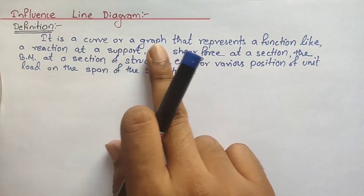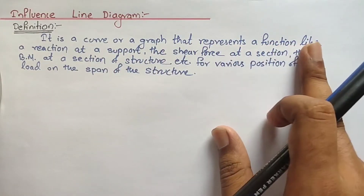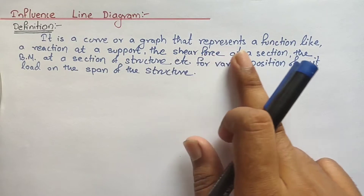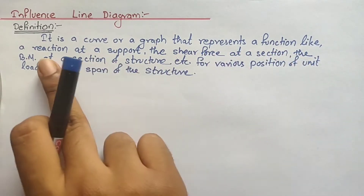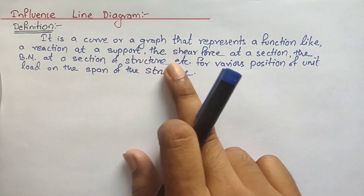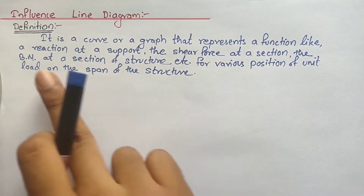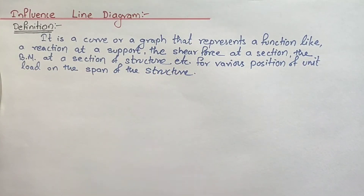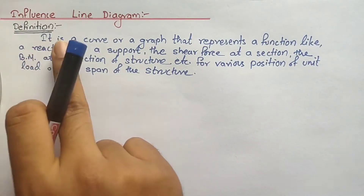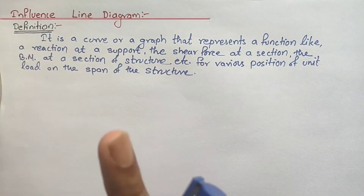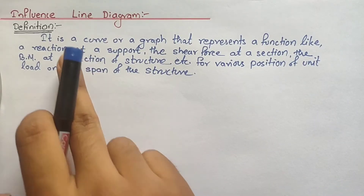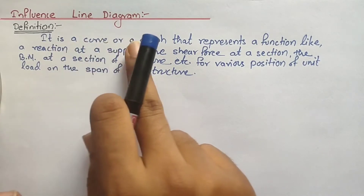The definition of Influence Line Diagram is: it is a curve or a graph that represents a function — like a reaction at a support, the shear force at a section, or the bending moment at a section of a structure — for various positions of a unit load on the span of the structure. From the exam point of view, this definition is very important.